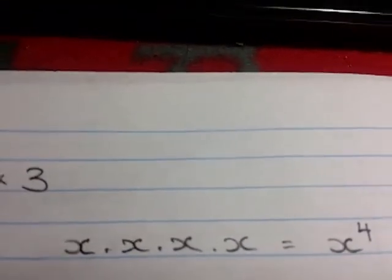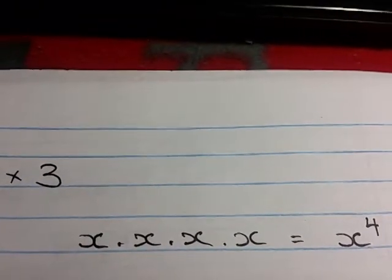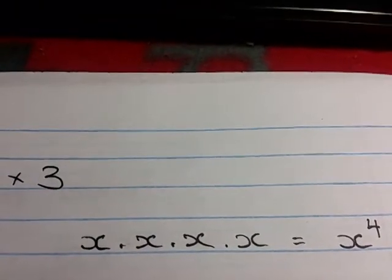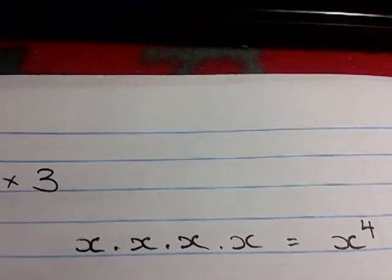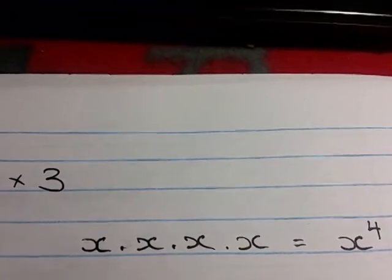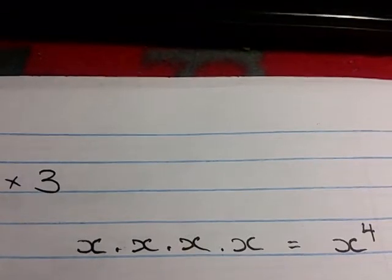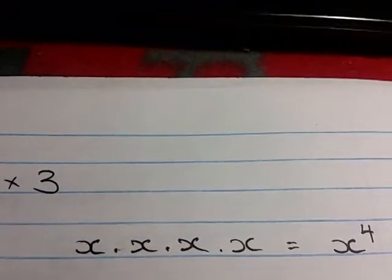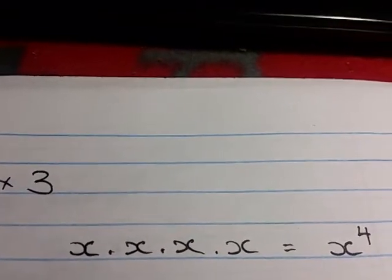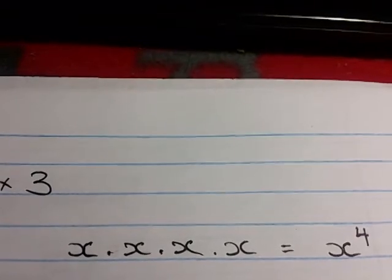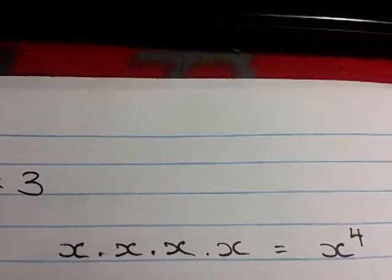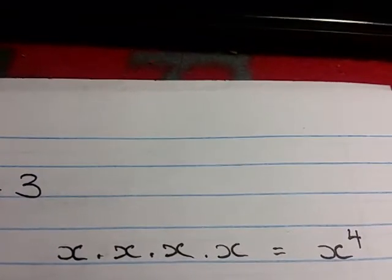So if we do another example of this, here you have x being multiplied by x and another x and another x. In South Africa, that dot over there means multiplication. Here you have 4 x's being multiplied together, which can therefore be simplified into x to the power of 4.